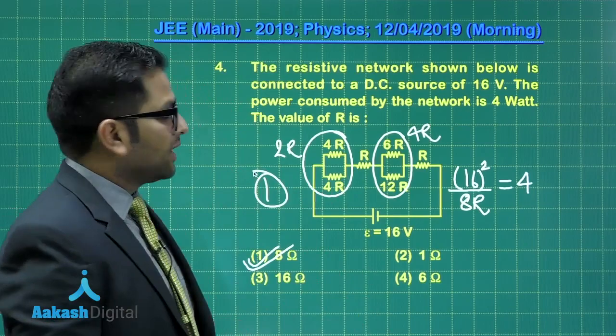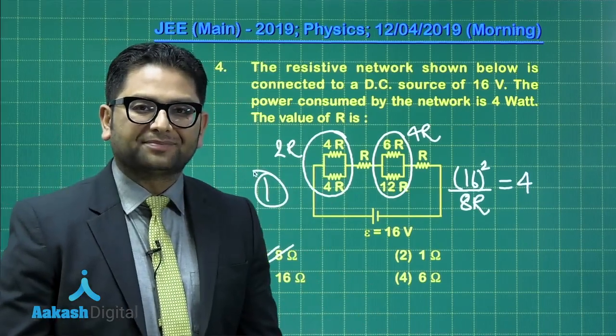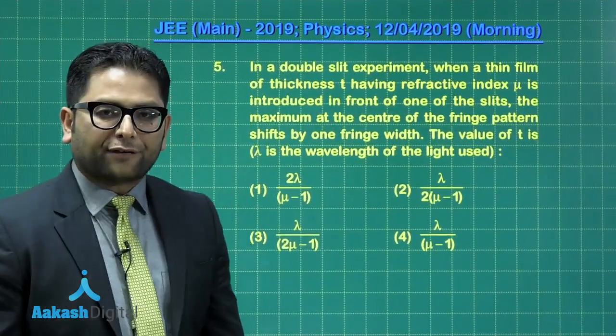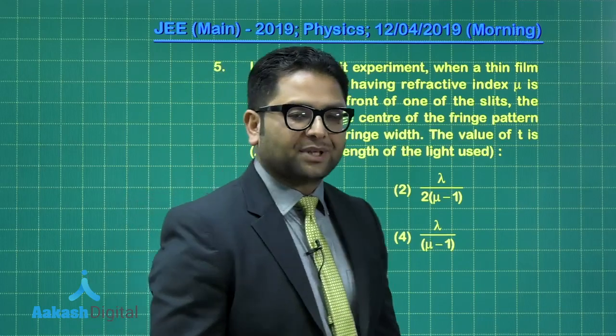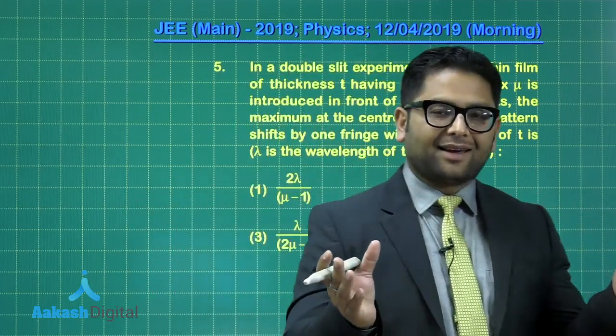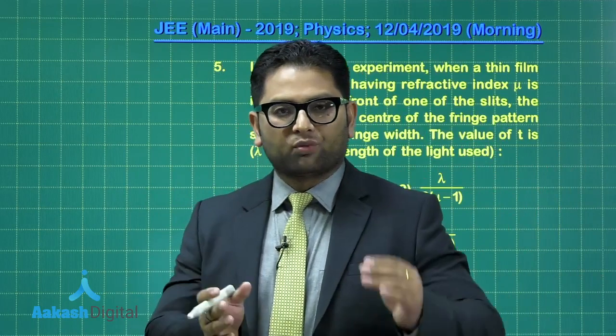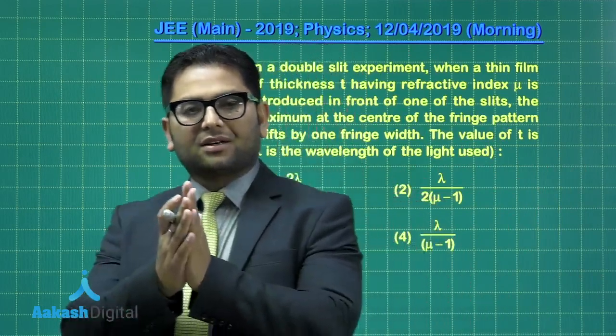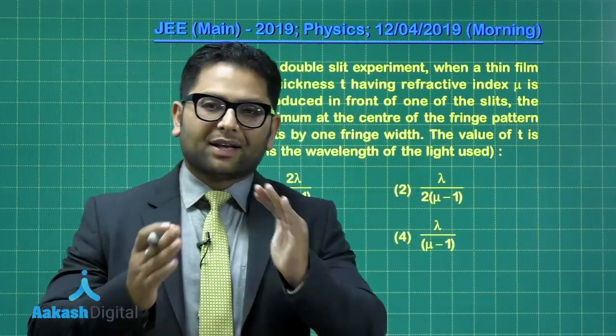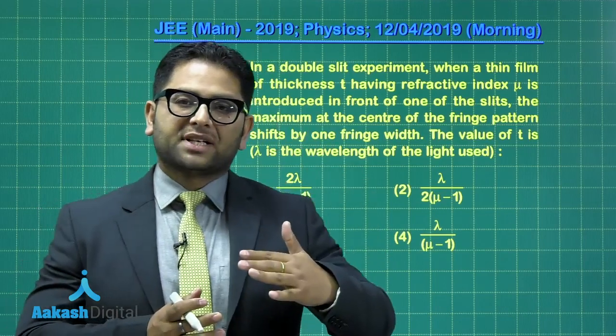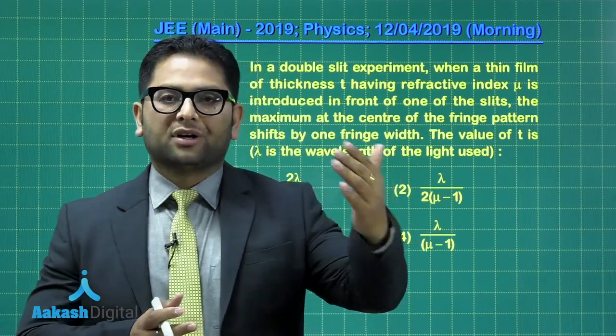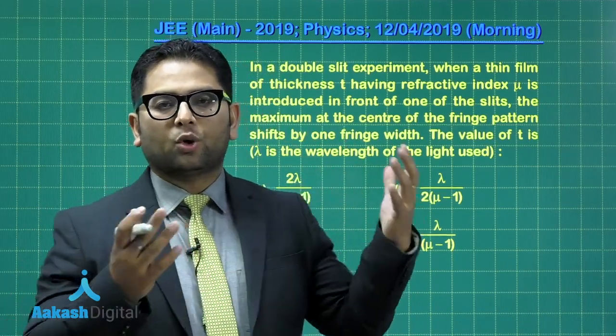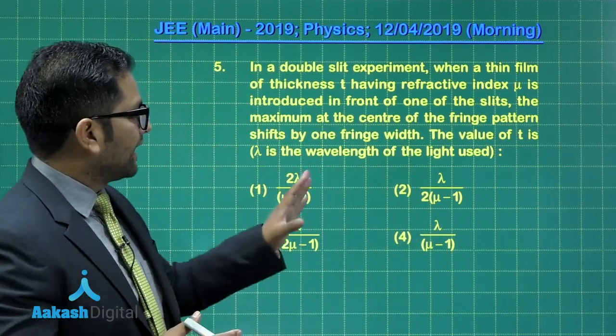Alright, now let's move to the fifth one. The fifth question from Wave Optics and YDSC, a special case of YDSC whenever we place a slab in front of one of the slits, then we know the central fringe would shift upward or downward depending upon where the slab is placed. That's the idea.